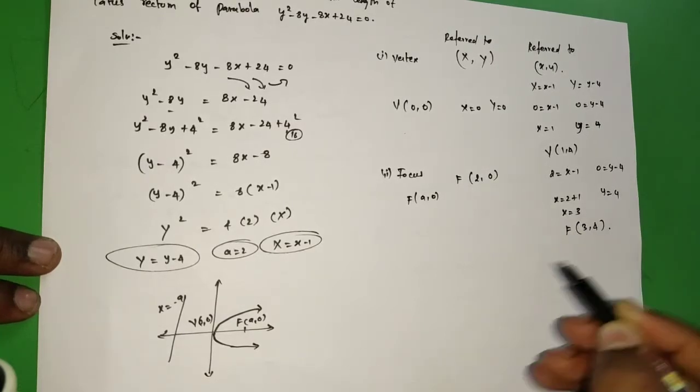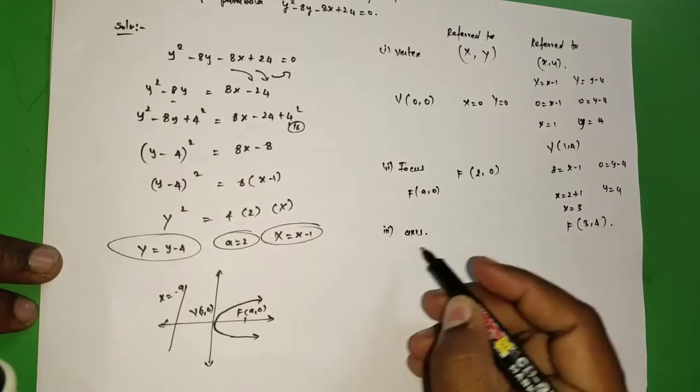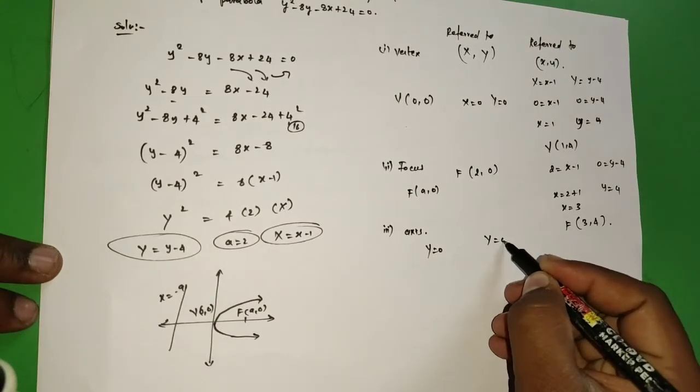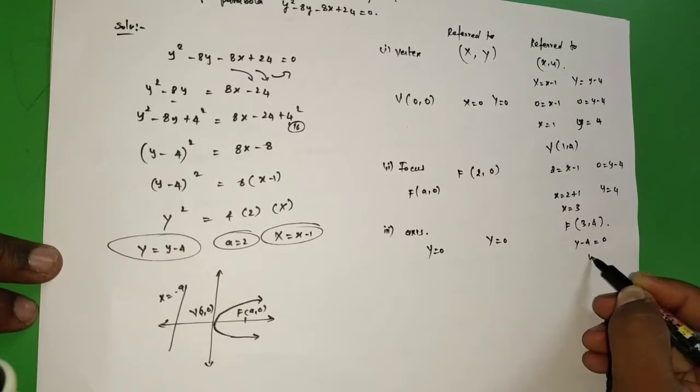Next, axis. For this diagram, axis Y = 0. So capital Y = 0, that means y - 4 = 0, then y = 4.